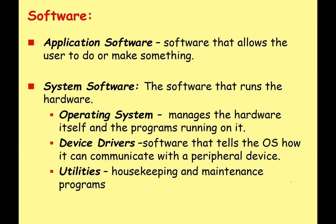Application software is software that we want to use when we use a computer — it allows the user to do something or make something. System software is really the software that runs the hardware; it interfaces between the hardware and software to allow us to do useful tasks. We've got the operating system, which manages the hardware and all programs running on the computer; device drivers, which tell the OS how to communicate with peripheral devices; and utilities, which are housekeeping and maintenance programs. I'll go through all of this in more detail in the next few videos.